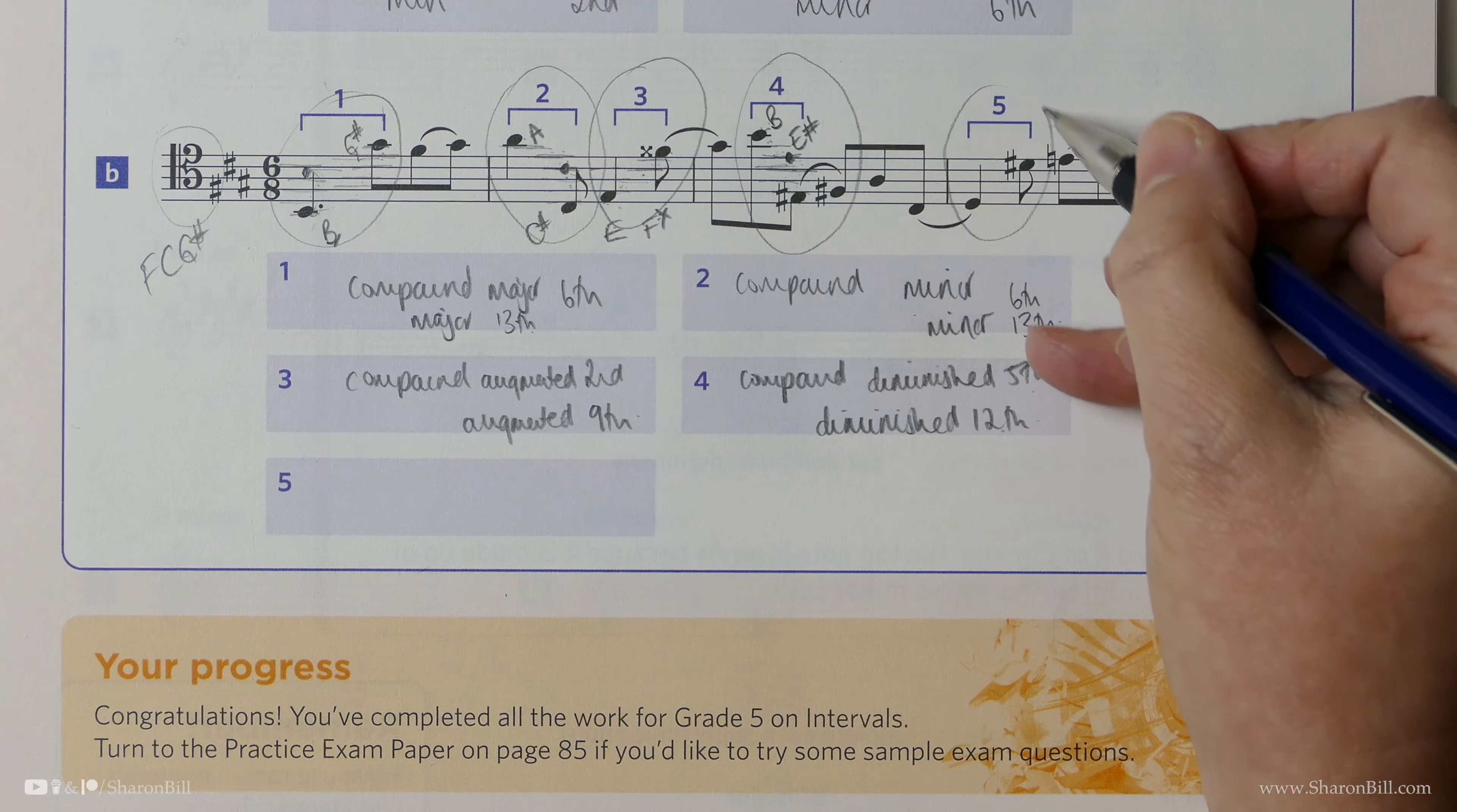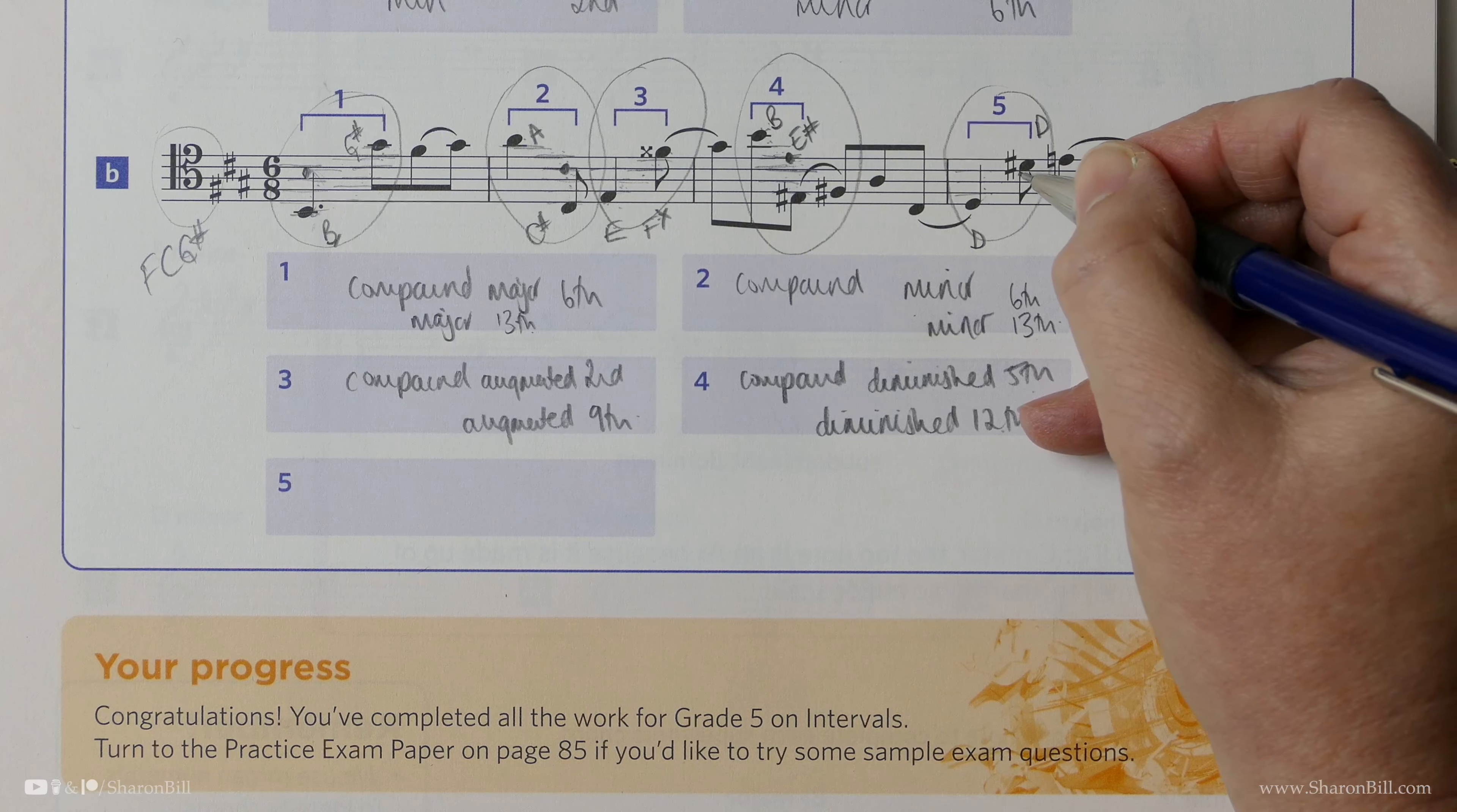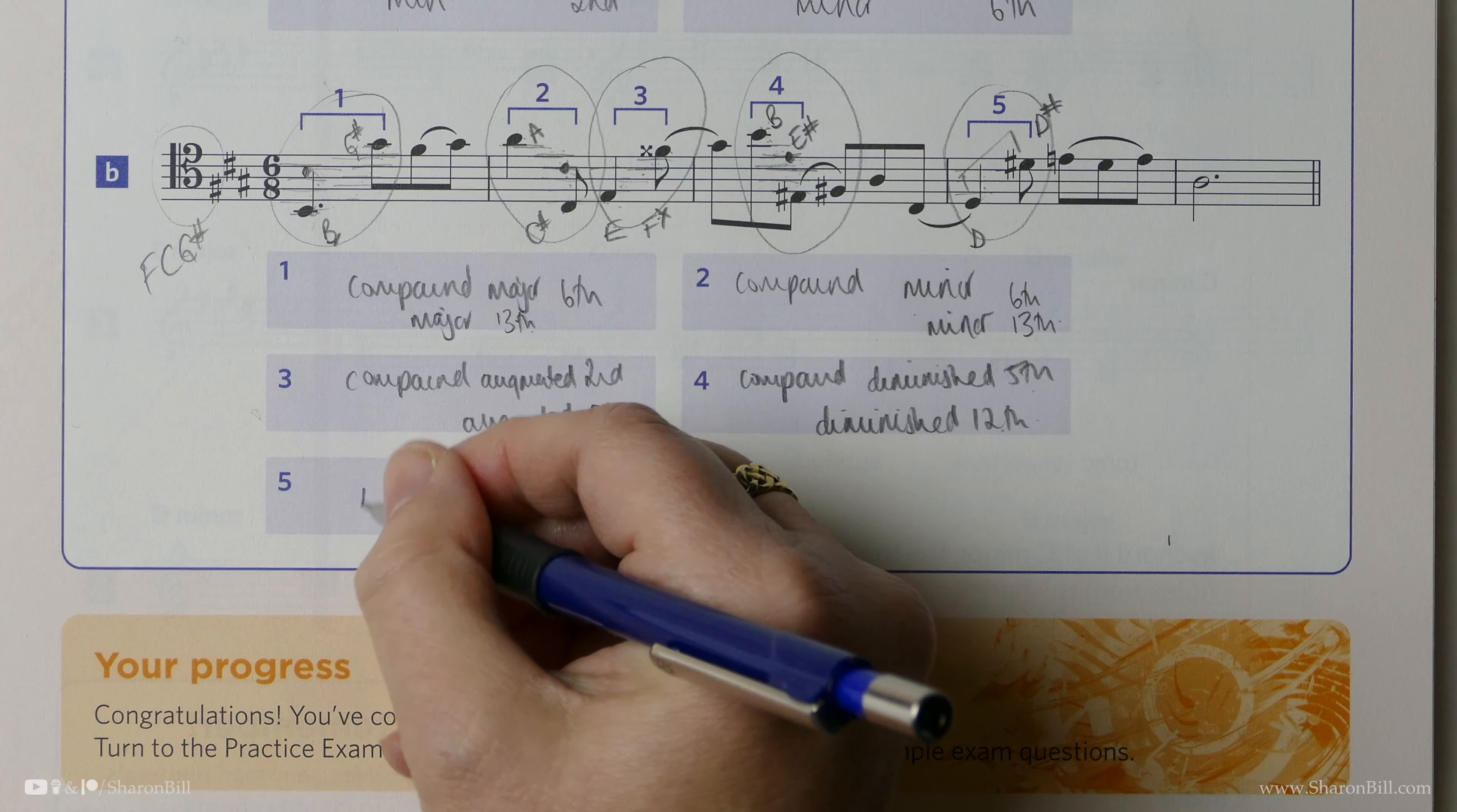And finally, let's look at this last interval here. So here, this is a note C, B, A, G, F, E, D. This is a D. And then here, this is a D-sharp. Is it C, D-sharp? Yes, that's a D-sharp. So we have an octave. There's no compound element here. It's an octave of some sort. We know that D to D is perfect. But because it's D to D-sharp, we've extended that. We've augmented it. So it's an augmented octave.